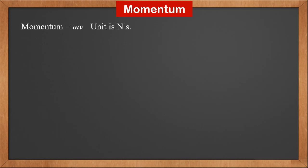Momentum is defined as m times v. Its unit is newton second. Momentum is a vector, and velocity determines its direction.